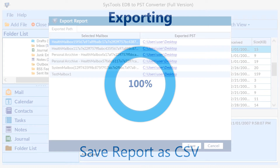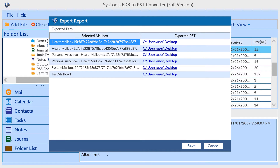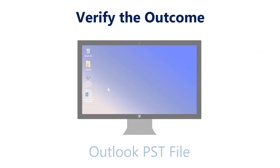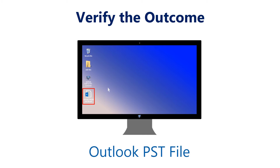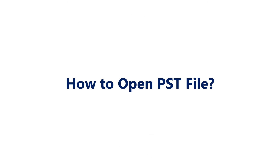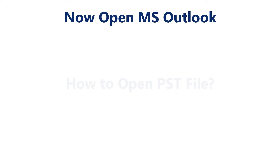The tool shows the exporting process and at the end generates a status report. You can save it as a comma-separated file. You can check the output PST file after the conversion process at the previously selected saving location.